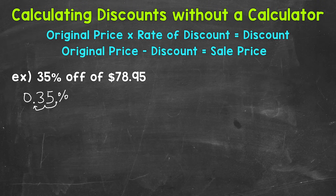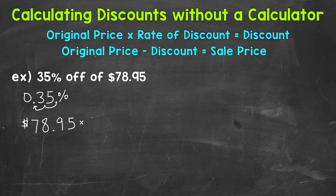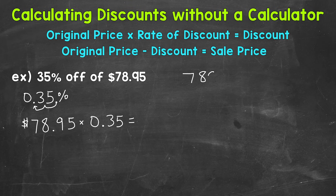Once we have that, we take our original price, $78.95, and multiply it by the rate of discount in decimal form. So let's write that out: $78.95 times 35% in decimal form, which is 0.35. Let's calculate that. When we multiply decimals, we can take the decimals out and then place the decimal in the answer once we get to that point.